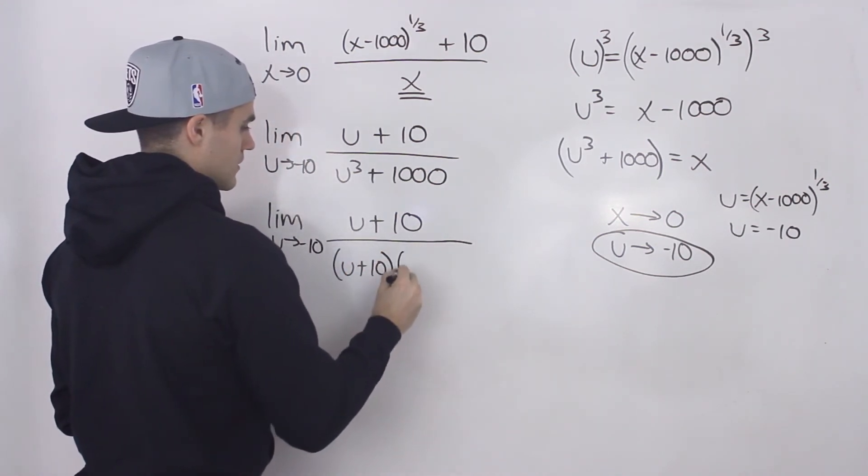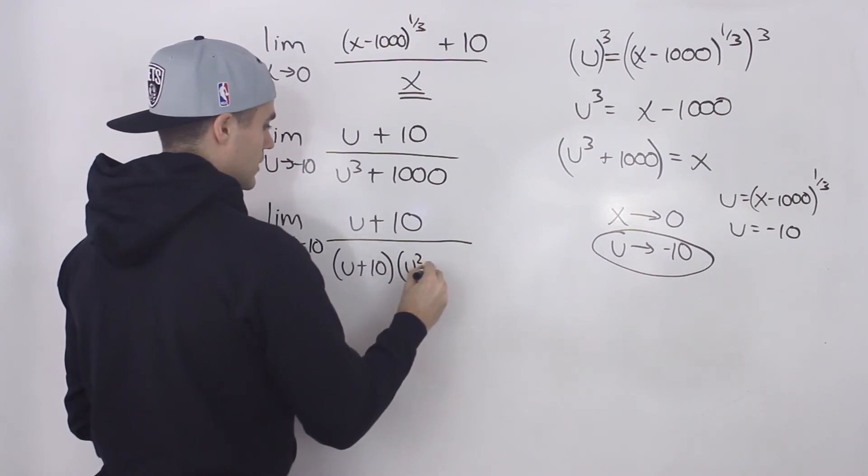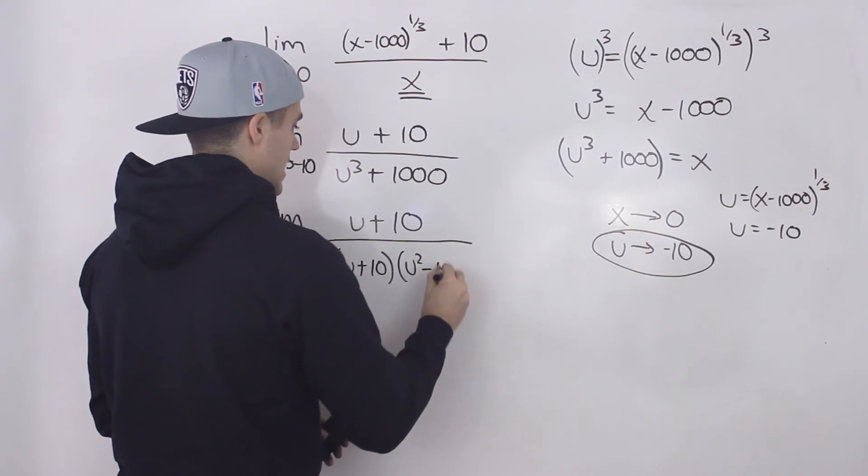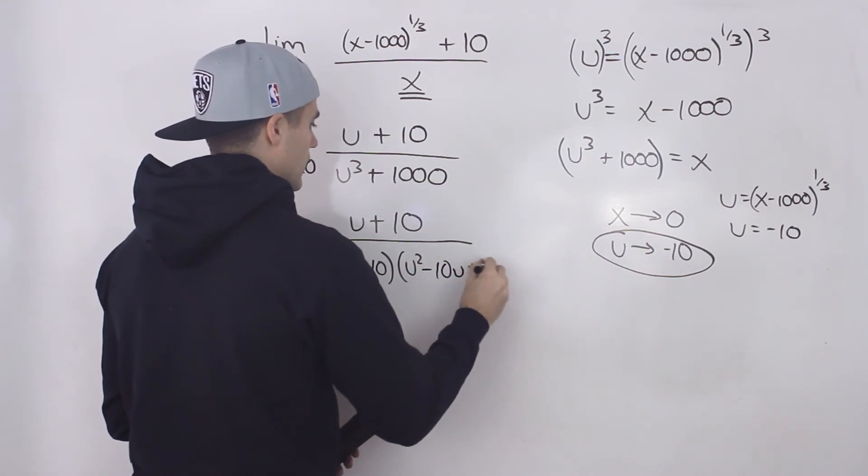So you can factor that denominator into u plus 10 times u squared minus 10u plus 100.